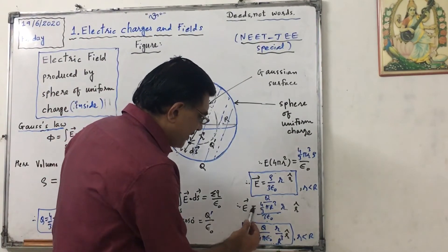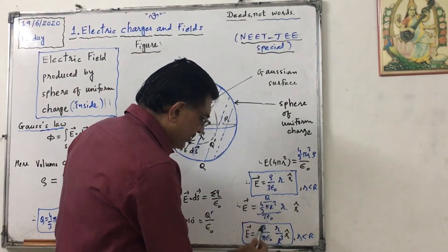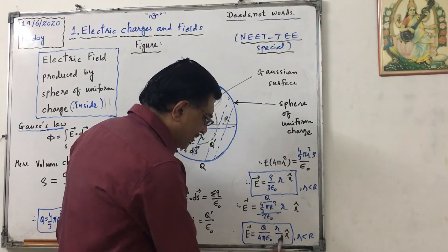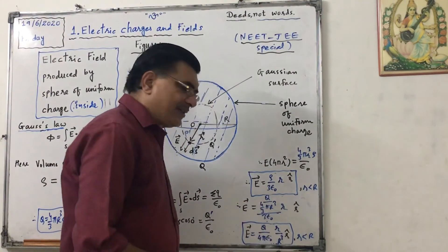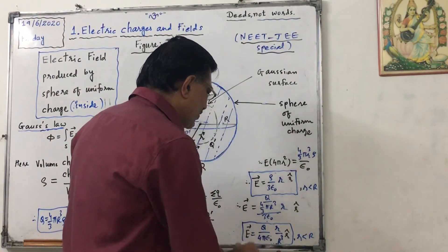So it will be Q into small r upon R cube into 4 pi epsilon naught, this will be cancelled.